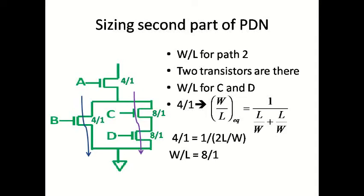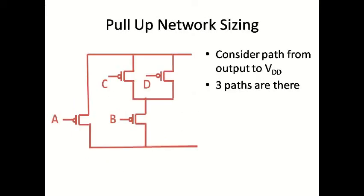With this, we have completed the sizing of the pull-down network. Now we consider the sizing of the pull-up network. For this, we have to consider the path from output to VDD, or from VDD to output.